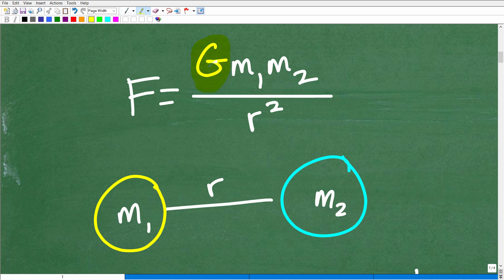G is a gravitational constant, so we don't need to worry about that. M1 is the mass of one object. M2 is the mass of another object. And then R is the radius or the distance between the two objects in space, something like planets, stars, etc.